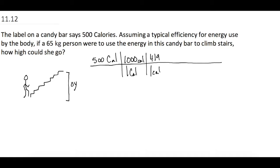It tells us that for every one little c calorie, there are 4.19 joules of energy. So, whenever we calculate this out, we have 500 times that by 1,000, 500,000 times by 4.19. The big C calories cancel, the little c calories cancel, and we're left with just the joules. That gives us 2,095,000 joules. So this is the total amount of energy that that candy bar gives us to use to climb up those stairs.